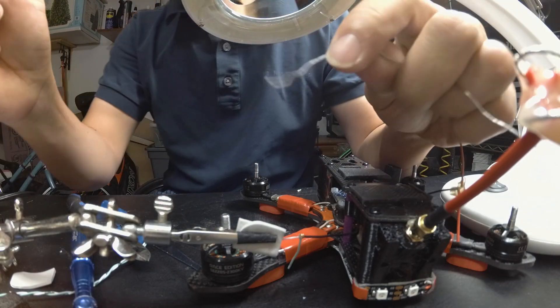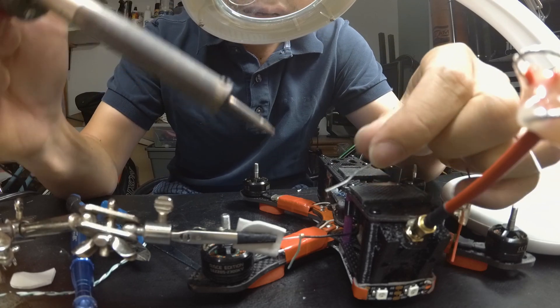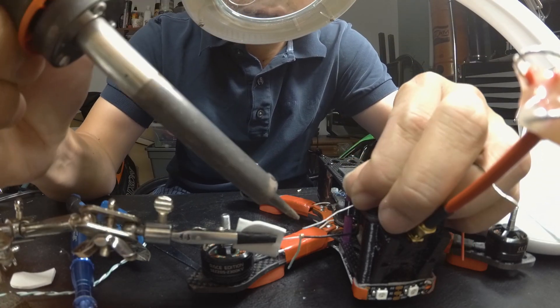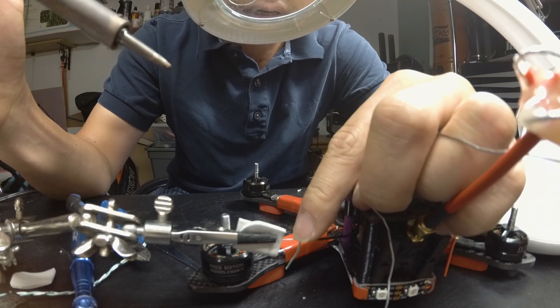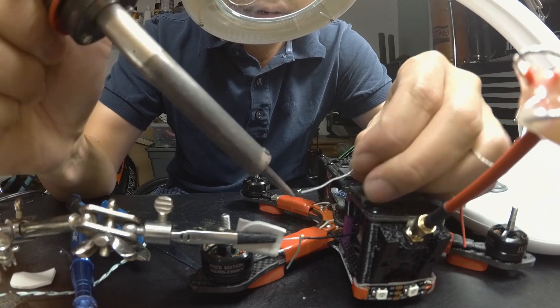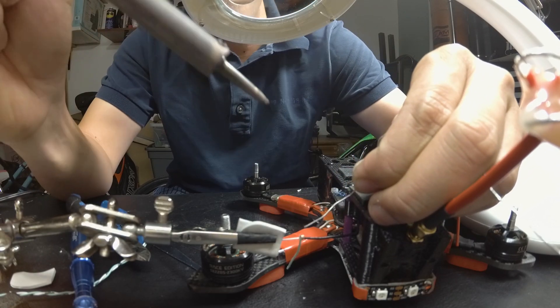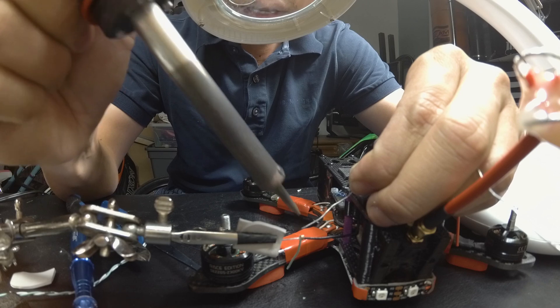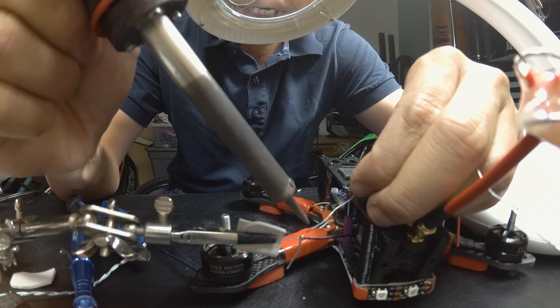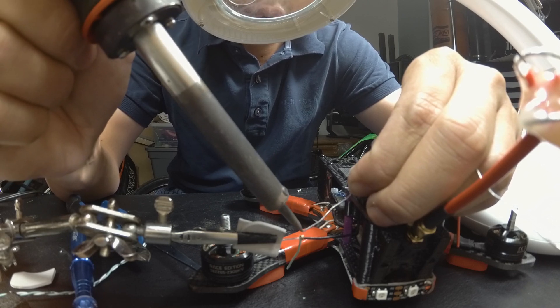So right now you're soldering and apply some solder onto this joint here. Basically the idea is to solder the network cable into the shielding of the coaxial cable.